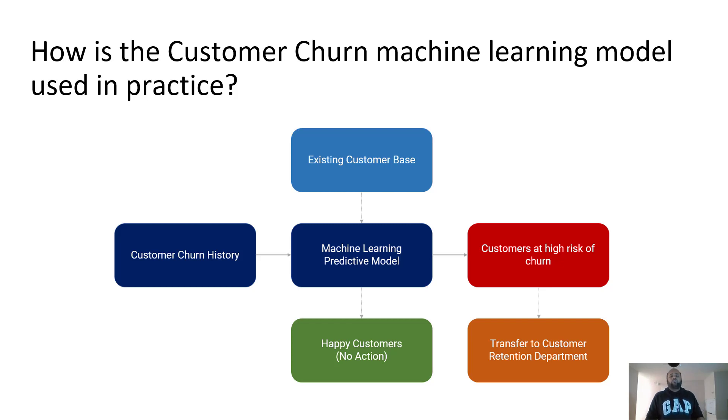Using that, you would train a machine learning model, which is this blue box in the center. And every month you're going to take your existing customer base and pass it to this machine learning model. And what it does is it separates out the happy customers, which are less likely to churn versus customers that are at the highest risk of churning. Once you predict those customers, you would transfer that list to customer retention department to do some kind of intervention to stop the churn. That's the business value of this project.